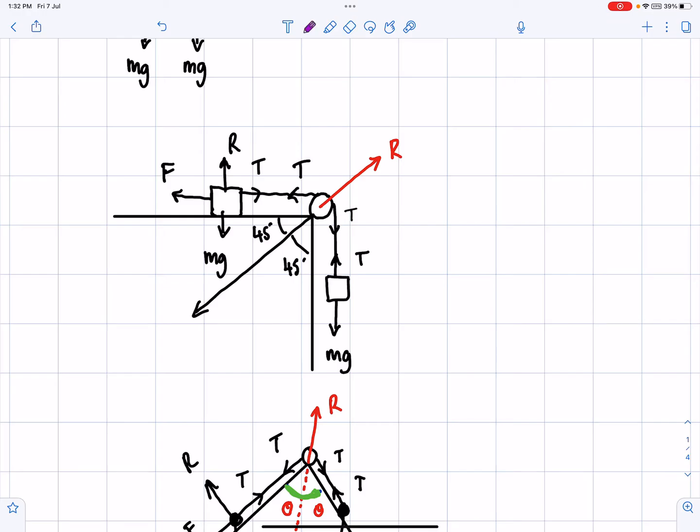I'm not going into any detail over this, but basically this T here, if I want it to act in that direction and this T here, if I also want it to act in that direction, we can just learn by rote that R is going to be equal to 2T, and then because this angle is 45 degrees here, 2T cos 45.